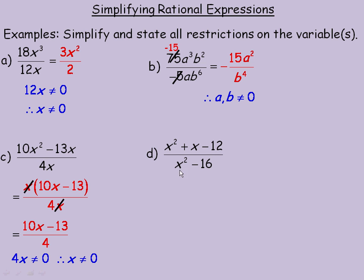For d, we start getting a little larger expressions, we need to factor x squared plus x minus 12 in the numerator and x squared minus 16 in the denominator. To factor the numerator, we're looking for two numbers that add to 1 and multiply to negative 12, and that would be 4 and negative 3.